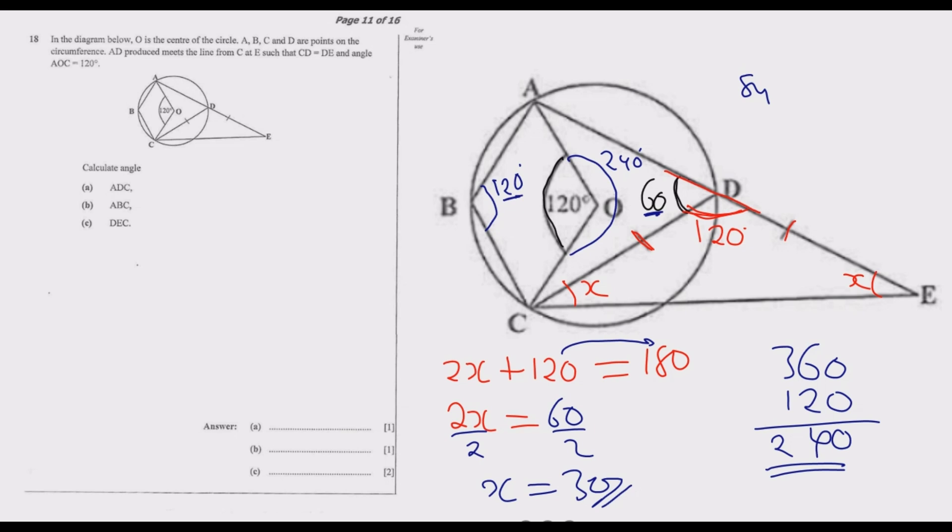So we've done the best that we can do. Let us look at the question. Angle ADC—so angle ADC is this one: 60 degrees that we already found. Then angle ABC—angle from A to B to C—is 120 degrees. Then angle DEC—angle DEC, so it's this angle we are looking at, D to E to C, which is the x we found. X is 30 degrees.